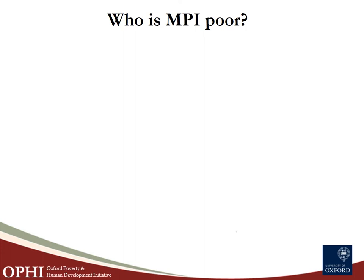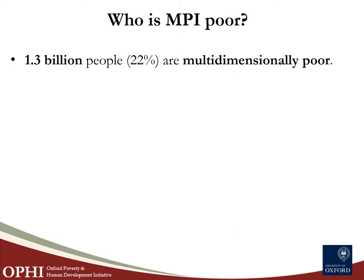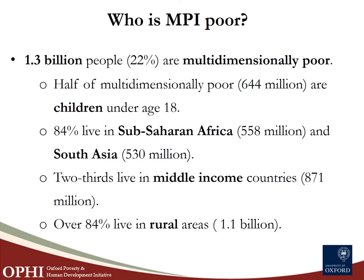What does the Global MPI 2020 show? We find that 1.3 billion people are living in acute multidimensional poverty — 22% of the population in developing regions are MPI poor. Almost half of the MPI poor are children under age 18. Some 84% live in Sub-Saharan Africa and South Asia. Two-thirds live in middle-income countries, and over 84% live in rural areas.